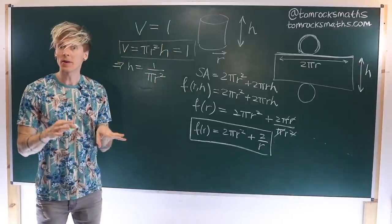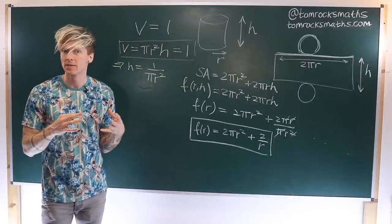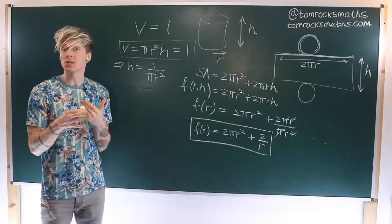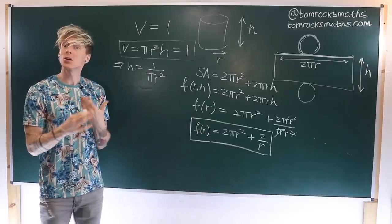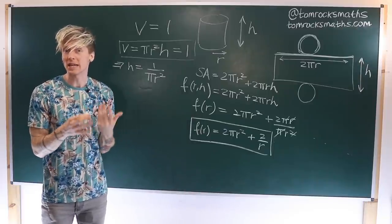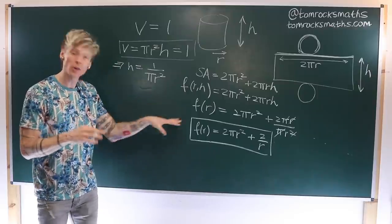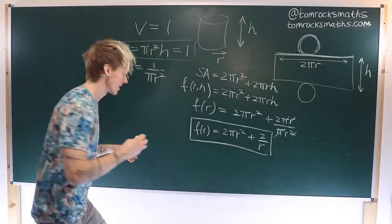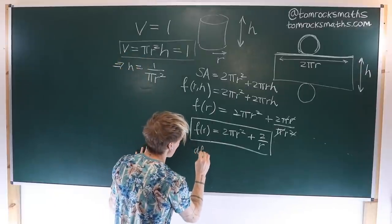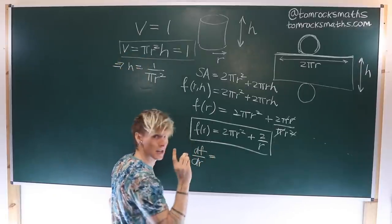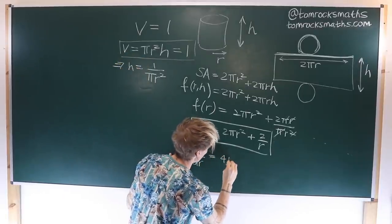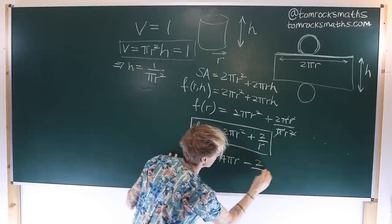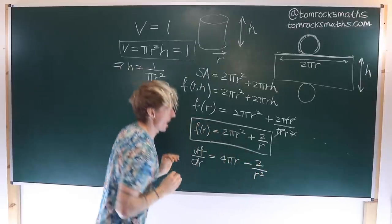We're now at the point where we need to differentiate. If we find the derivative of this function and set it equal to 0, we know that this corresponds to a turning or stationary point, and hopefully this will be our minimum. So taking the derivative, df/dr is equal to 4πr minus 2/r².